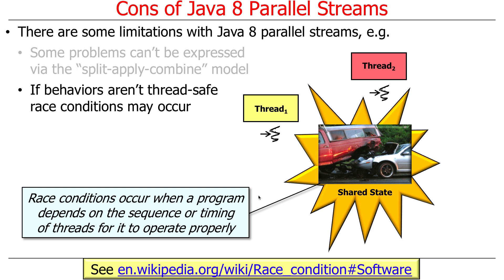Another problem is that if the behaviors you're writing in the stream aren't thread-safe, various race conditions can occur. Race conditions are the problems that arise when your program depends on the order or timing of thread execution to get the right results. Pretty much any case where you're trying to access mutable shared state from multiple threads — especially updating it in parallel — you'll have problems if you don't synchronize your code. Either partition your code to not need synchronizers or use the appropriate ones.